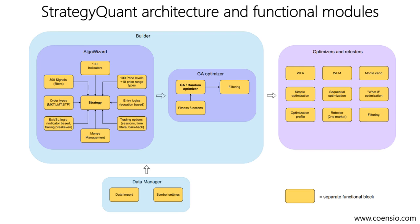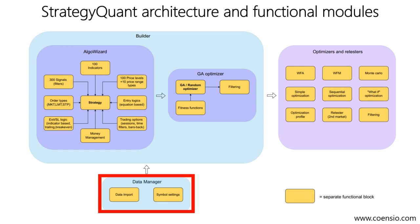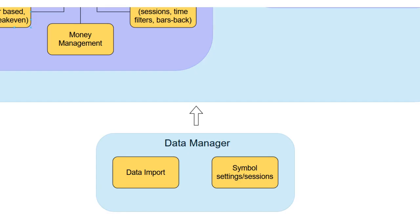Let's examine the architecture of StrategyQuant. It comprises several functional modules, including the Builder module, the Data Manager module, and the Optimizer Retester module. The Data Manager module allows for the direct import of historical data from the chosen trading platform or broker, ensuring that strategies created using StrategyQuant produce the same results as on the actual trading platform.